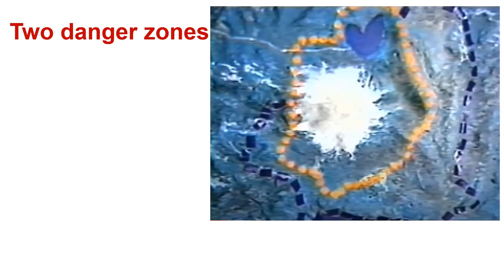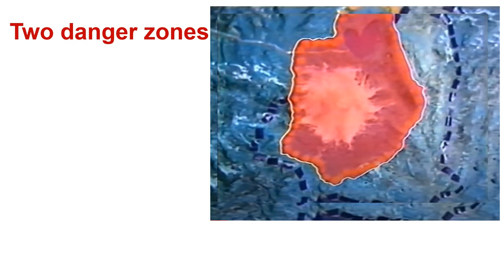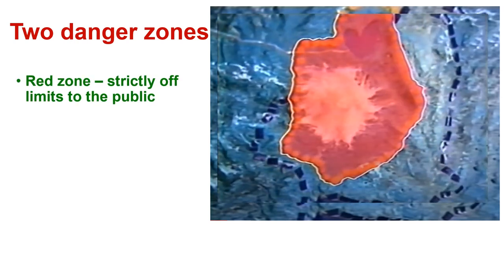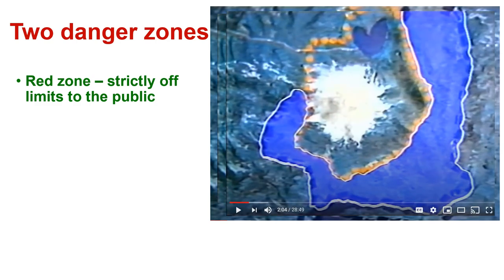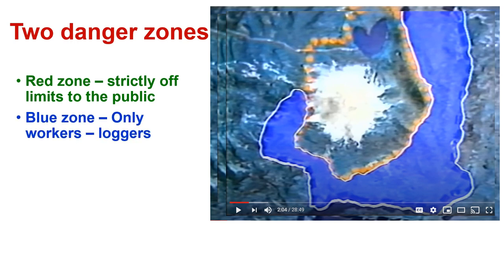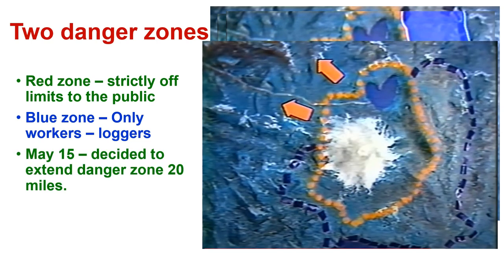There were two danger zones in the area of Mount St. Helens. The orange outline represents the red zone, strictly off limits to the public. The blue around that orange line was the blue zone — only workers and loggers were allowed to go into that area. On May 15th, the governor decided to extend the danger zone 20 miles northwest. Unfortunately, before that danger zone could be extended, the mountain exploded three days later.